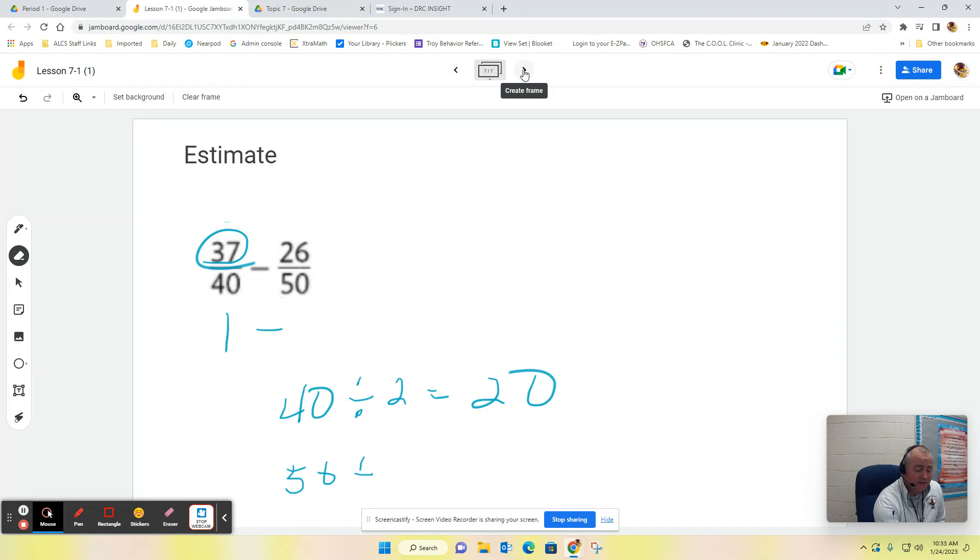Now all you've got to do is say, okay, well, let's take a look at 26. Is 26 closer to zero, closer to 25, or closer to 50? Well, 26 is much closer to 25. That means this guy is going to go to a half. And when I subtract 1 minus a half, I get one-half.